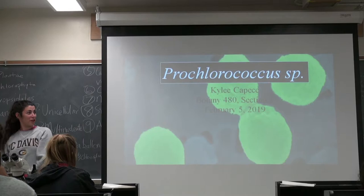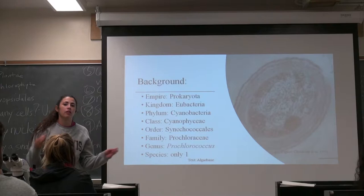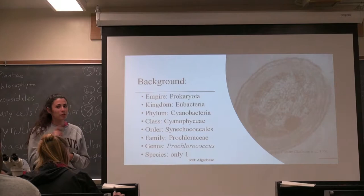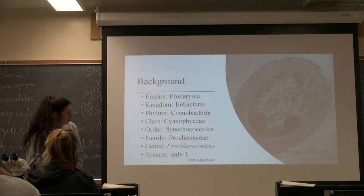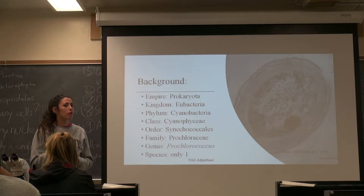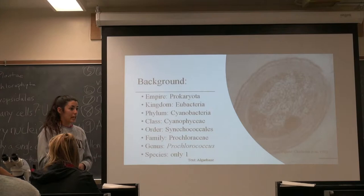So some background information about the taxonomy of it. It's from Prochlorobacteria — eubacteria, cyanobacteria, cyanophysia, Synechococcales, Prochlorospices — and then the genus, which is Prochlorococcus. There's actually only one species, but it's divided into like six different clades based on their temperature optimum.